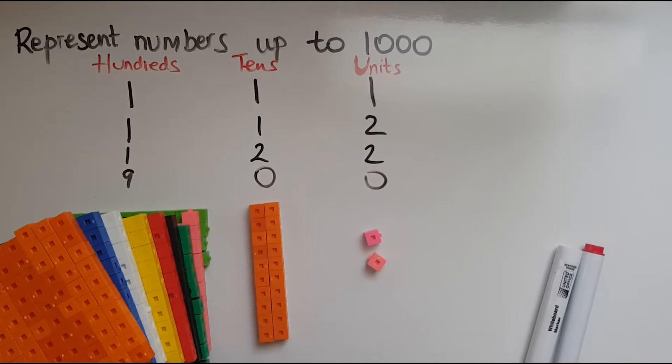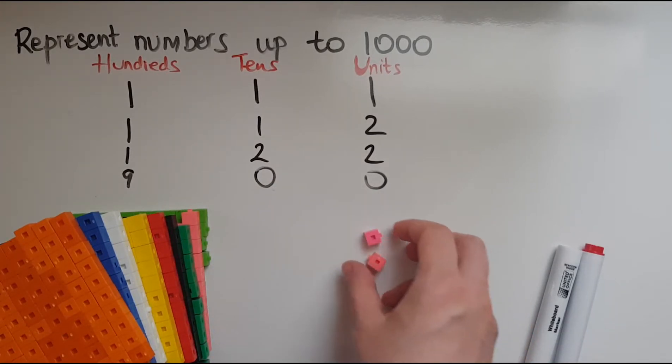You can probably see here that we've got 9 rows of 100. So that is 900 here. And that shows that there are 0 tens and no units. So 0 units.